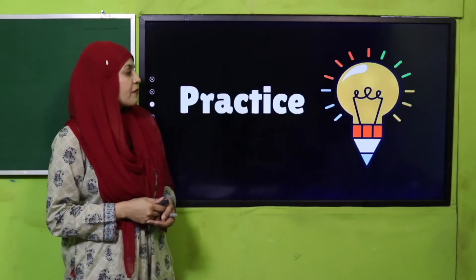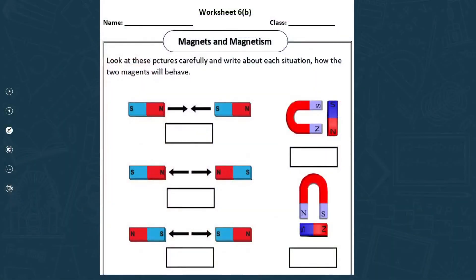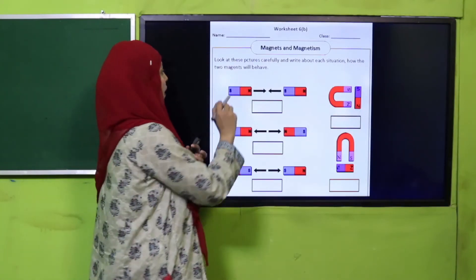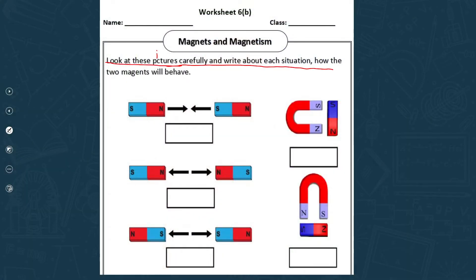Now is the time for practice. You can download this worksheet from the description box below or get it in print form. This is a simple worksheet. Write down your name and class, then look at these pictures carefully and write about each situation - how the two magnets will behave. Here north and south poles will attract each other. Here is a horseshoe magnet and a bar magnet - south and south, or north and north, will repel each other. They will attract, and they will also repel. This is how you will complete the worksheet.